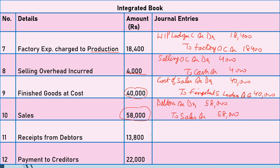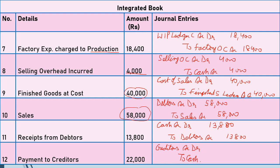When we receive amount from debtors, cash increases and debtors decrease. Entry: Cash Account Dr. to Debtors Account — Rs.13,800. Our last transaction is payment to creditors. Creditors are a liability and when liability decreases, we debit it. Entry: Creditors Account Dr. to Cash Account — Rs.22,000.